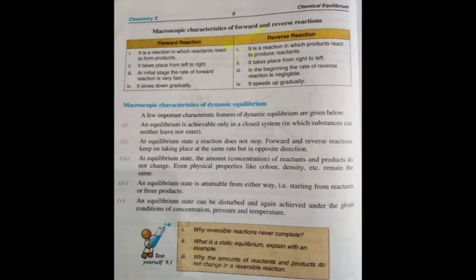The second property: at equilibrium state, the reaction does not stop. When equilibrium is attained, the reactants are being converted into products and the products are converting back into reactants. The forward and reverse reactions are both taking place at the same rate but in opposite directions.